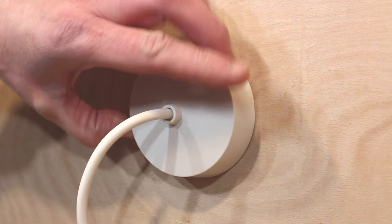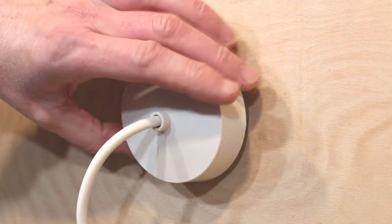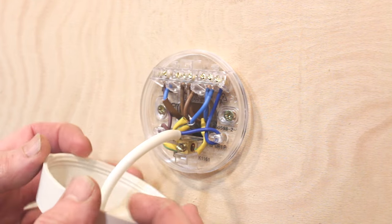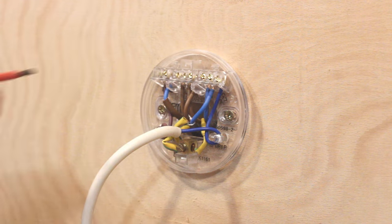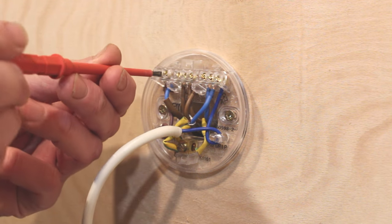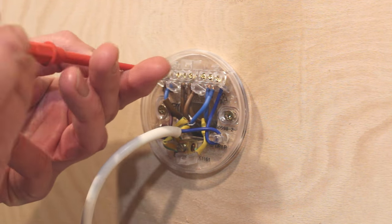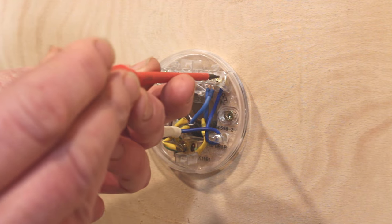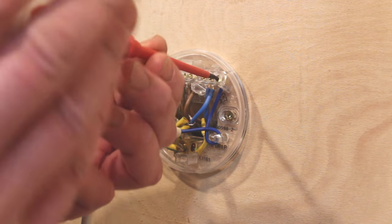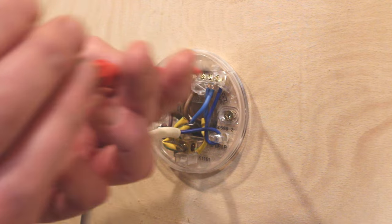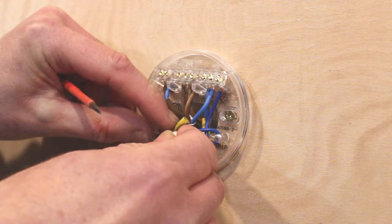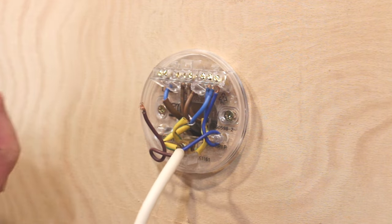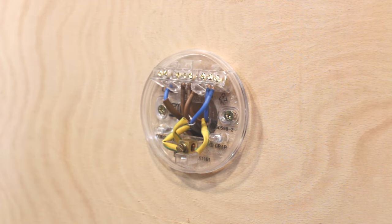First of all take the ceiling rose cover off and the next thing we want to do is disconnect the pendant light connections. So undo the connection on the switch live block like that and on the neutral side. With a bit of wiggling, undo the live and take off the neutral.